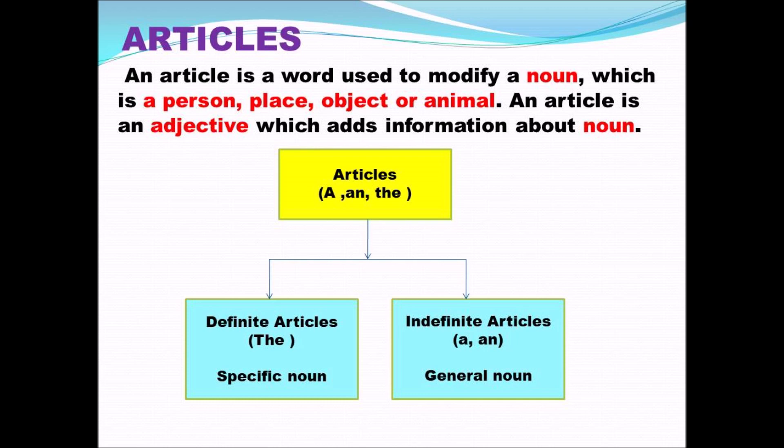What does it mean? A word that is an article is used to modify a noun — it means to describe or give information about the noun. What is a noun? It is a naming word which refers to a person, place, object or animal. So we use an article before a noun, and it adds information about that noun. An article is an adjective which adds information about the noun.